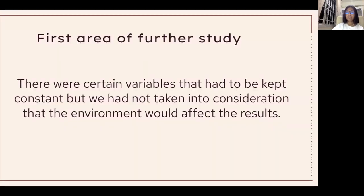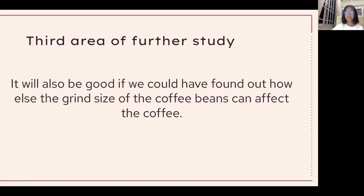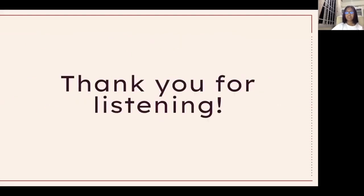Now on to some areas for further study. First, there were certain variables that had to be kept constant, but we had not taken into consideration that the environment would affect the results. Second, we could have done more research on why the pH levels increase and decrease over time. Third, it would also be good to find out how else the grind size of coffee beans can affect the coffee. Thank you for listening.